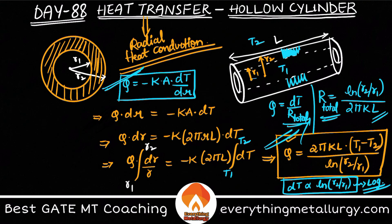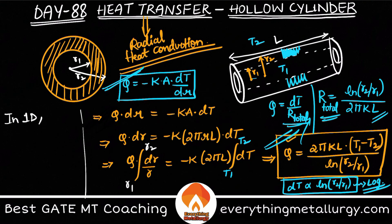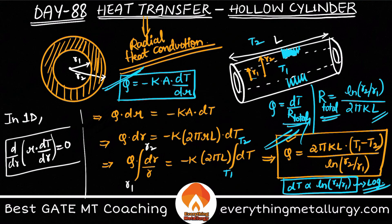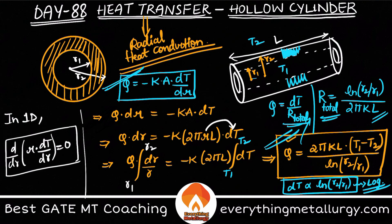For the 1D steady-state condition in a cylinder, the governing equation is: d/dr · (r · dT/dr) = 0. This is derived by treating r and dT together and differentiating, with all other terms being constant. This equation represents the 1D heat transfer condition for a cylinder.